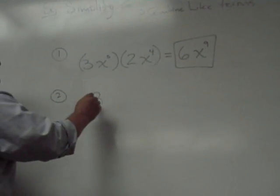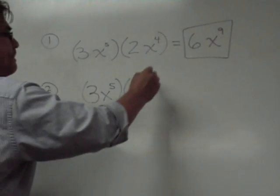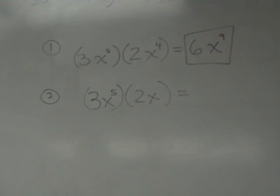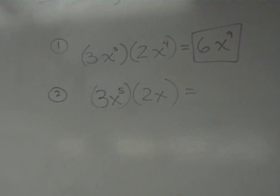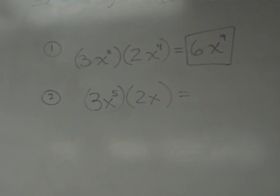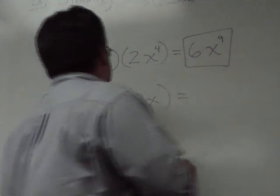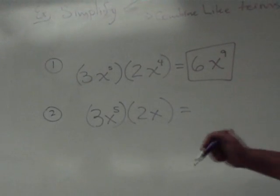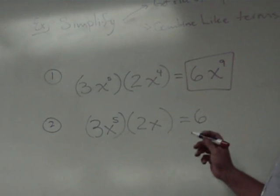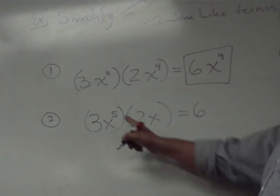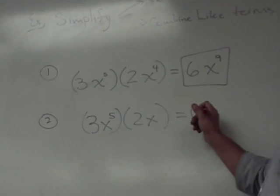Question number two: 3x to the fifth times 2x. That's a good problem because even though you do not see an exponent, there's an exponent there that you have to be aware of. So you multiply the coefficients, right? 3 times 2 is 6. And what's the power of x now? We have 5 and here a 1, and 5 plus 1 is 6.